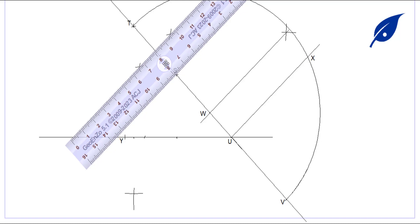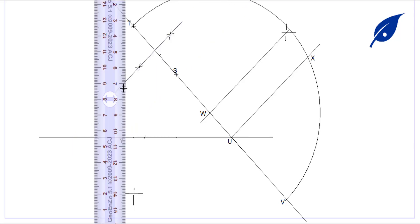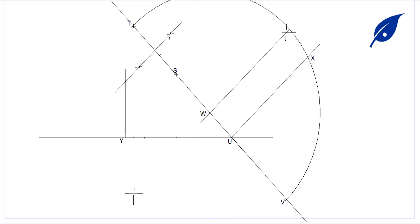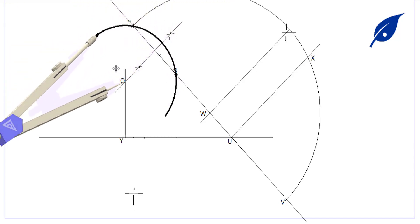The next step is to bisect the line TS. After bisecting, we extend the perpendicular bisector so that it meets the perpendicular line coming from Y. The point where they meet gives us point O, which will be the center of the circle we are going to describe.